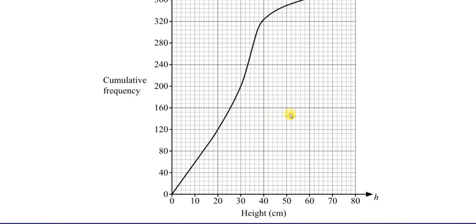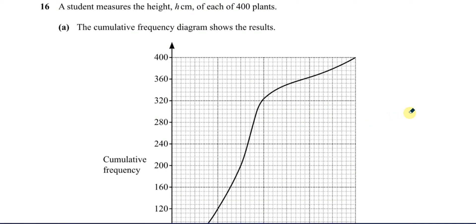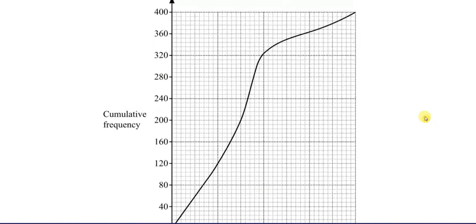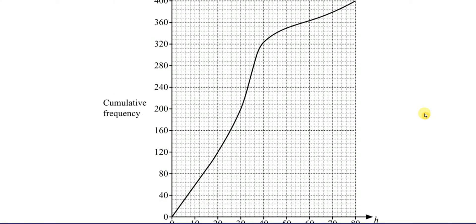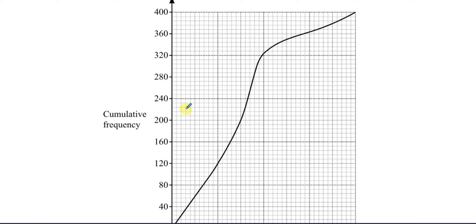So now, the question says the cumulative frequency diagram shows the result — find the median. The median of a dataset is the middle entry. When we have all individual values or an ungrouped frequency table, we find which entry is exactly in the middle. If there's an even number of entries there will be two numbers in the middle; if there's an odd number there will be one.